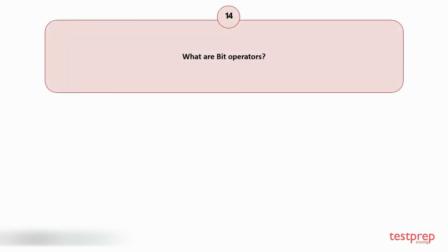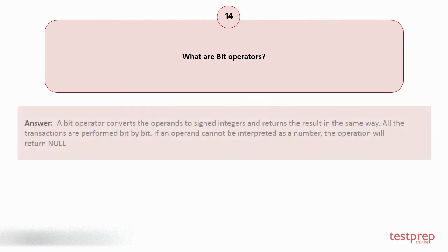Question number 14: What are bit operators? A bit operator converts the operands to signed integers and returns the result in the same way. All the transactions are performed bit by bit. If an operand cannot be interpreted as a number, the operation will return null.